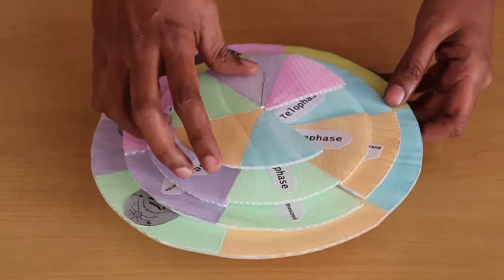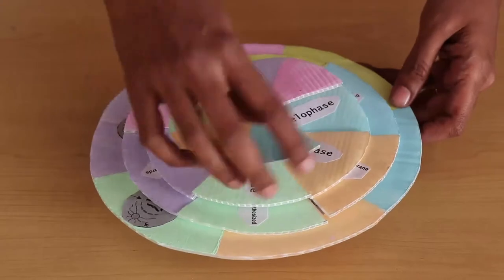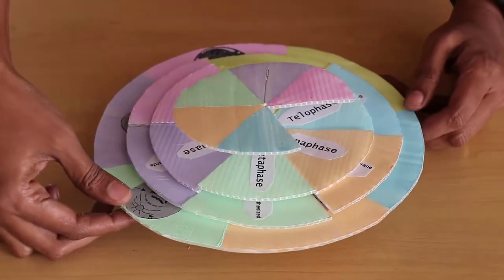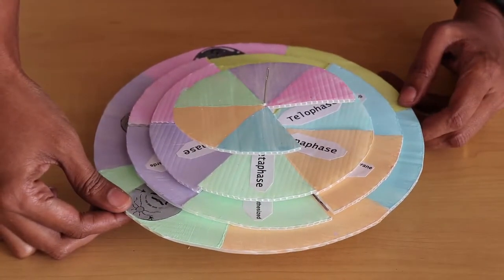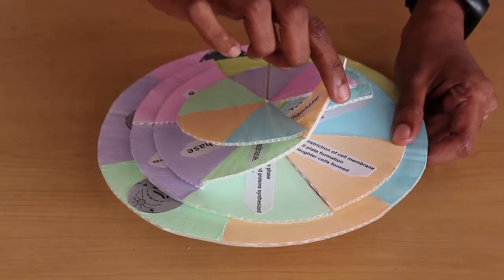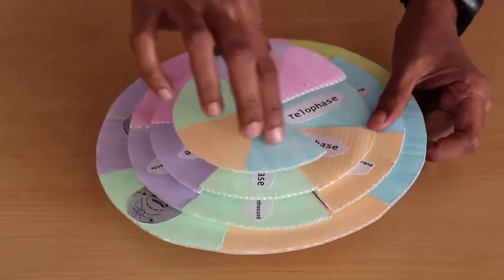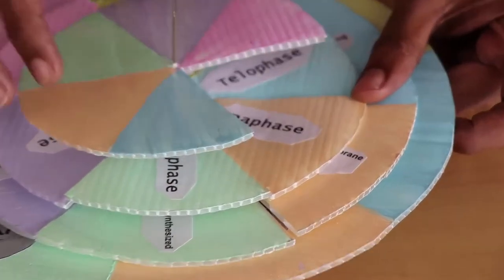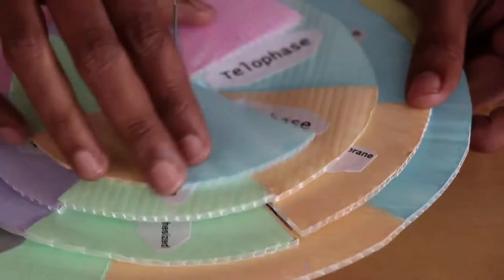This consists of four discs. On the first disc, I have diagrams pertaining to cell division. On the second disc, I have characteristics pertaining to cell division. On the third disc, I have the names of the phases, and the fourth disc is merely a masking disc.